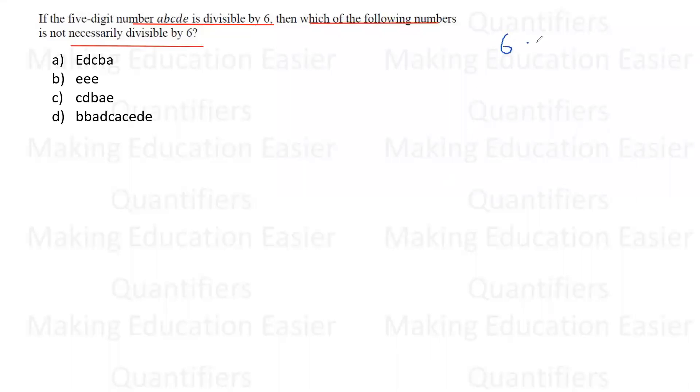Just simple trick, students. Six se divide, which number will be multiple? Now, two ka multiple means that number should be even. So if number is even, we can definitely say that last digit, that means E, which should be even.